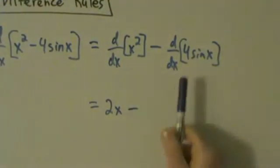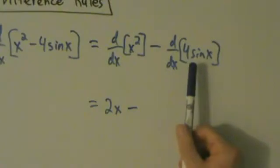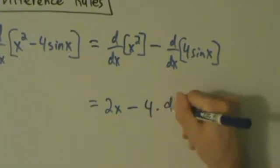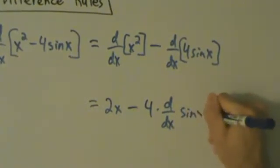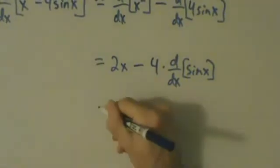And what do we have here? 4 sine x - we're taking the derivative of all of that. The 4 can be pulled out. So this is minus 4 times the derivative of sine of x. That's what we have so far.